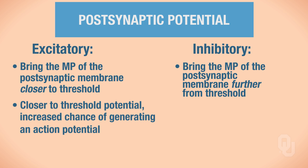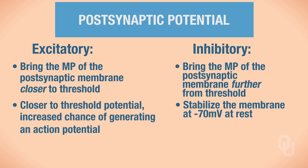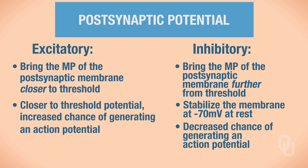In an inhibitory postsynaptic potential, we either move the membrane potential further from threshold in the negative direction, or we stabilize the membrane at rest, which is negative 70 millivolts. Either way — whether we bring the membrane further from threshold or stabilize it at negative 70 — both outcomes decrease the chances of generating an action potential on the postsynaptic neuron, because the further from threshold you are, the less likely you are to fire.